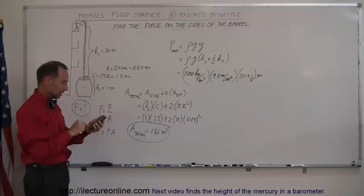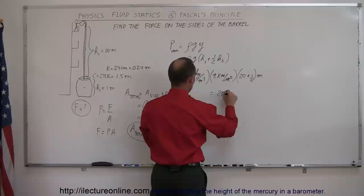What's 1000 times 9.8 times 20.5? That would be a pressure of 200,900 newtons per square meter, or pascals.